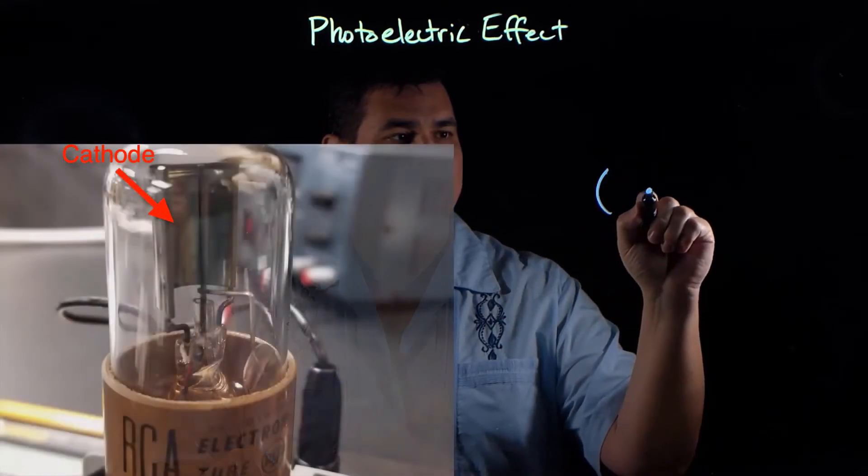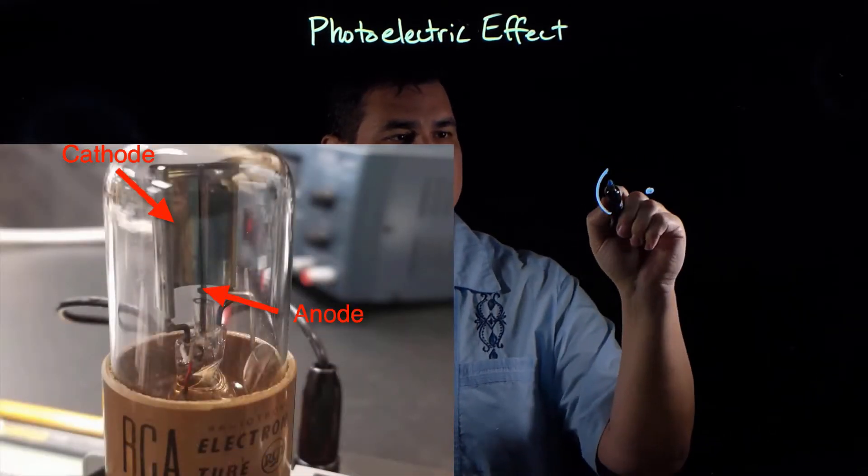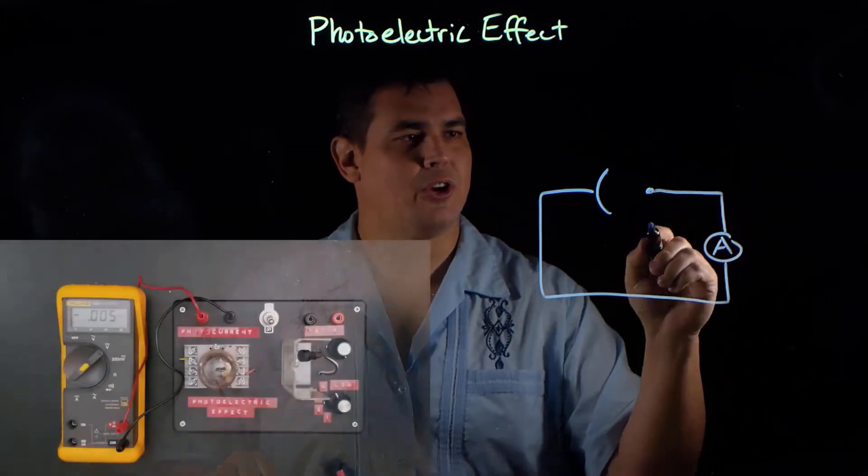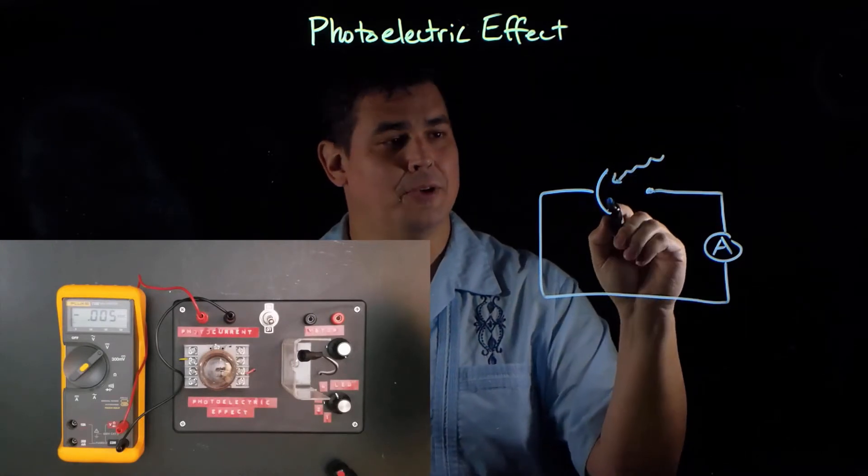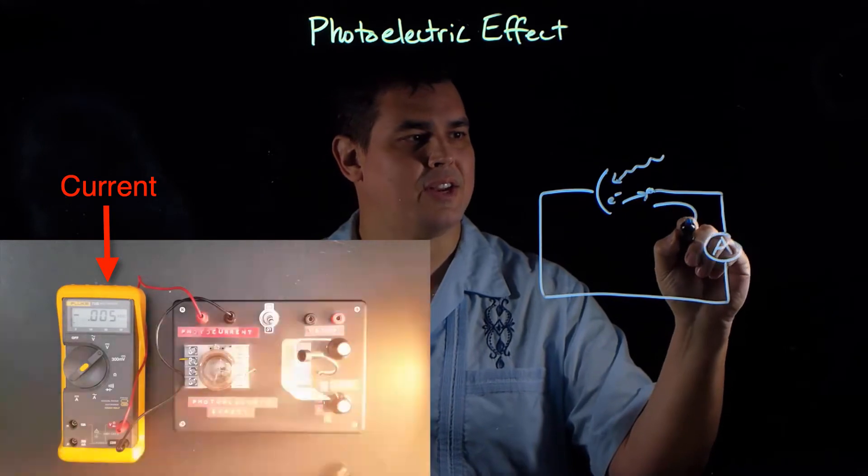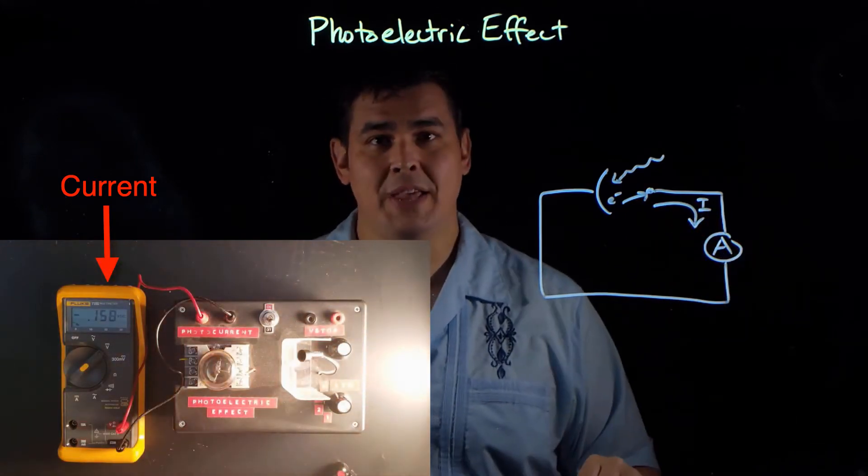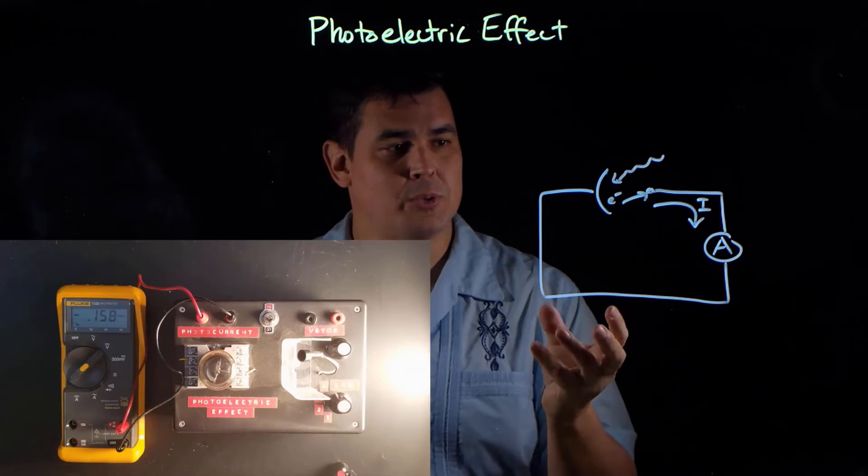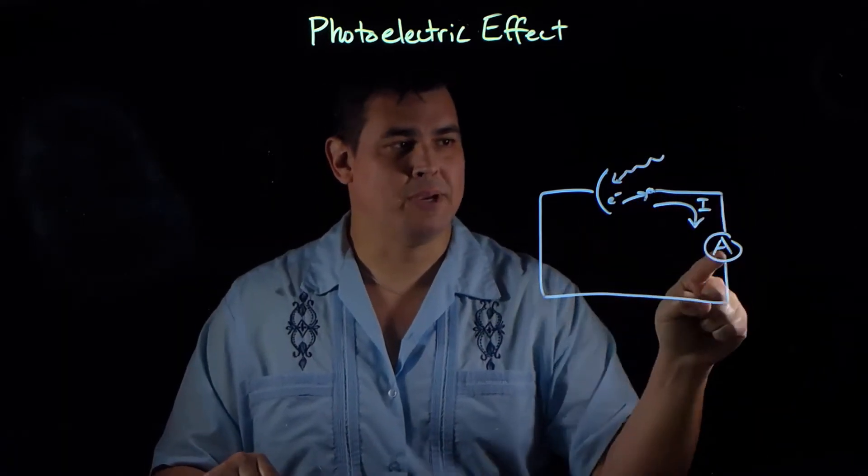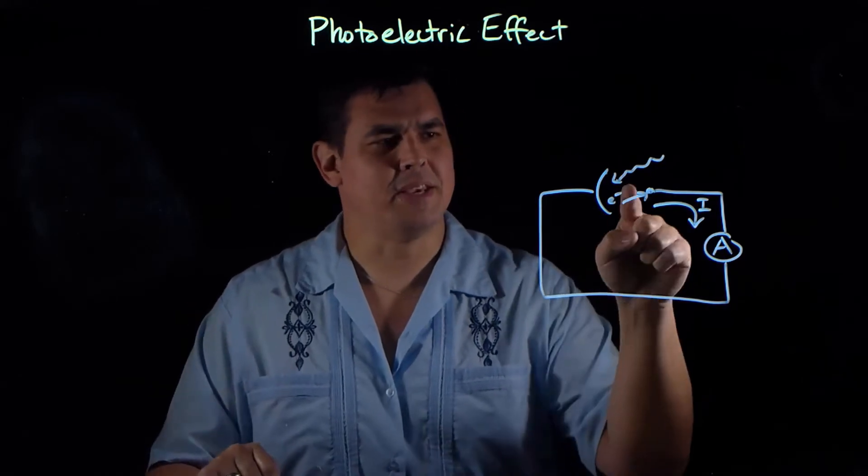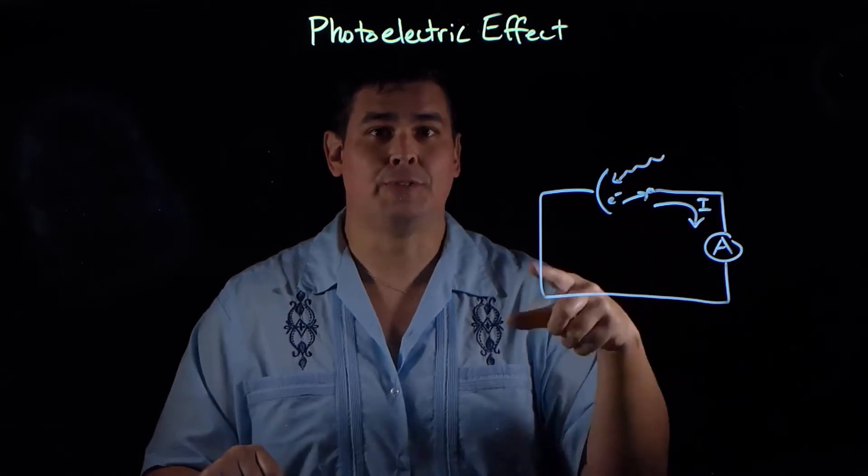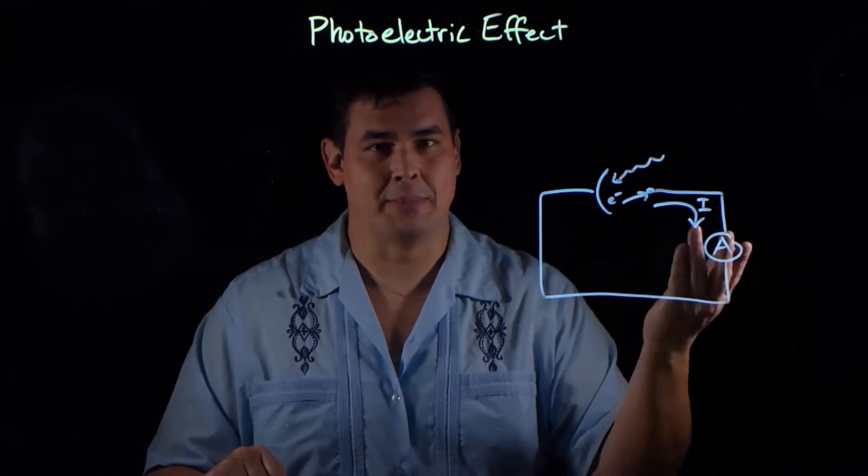So basically, this is what they did. You have a cathode and an anode. And so if you hook this up to an ammeter to measure the current, you can shine light on this cathode, and what happens is electrons will jump off, and that's going to create a current, and you can measure that current with the ammeter. And so something they noticed was when they shined brighter light on the cathode, brighter light caused a bigger current, and that kind of makes sense, because if you shine more light, you get more electrons. And electrons flowing is current. The number of electrons per unit time is current.